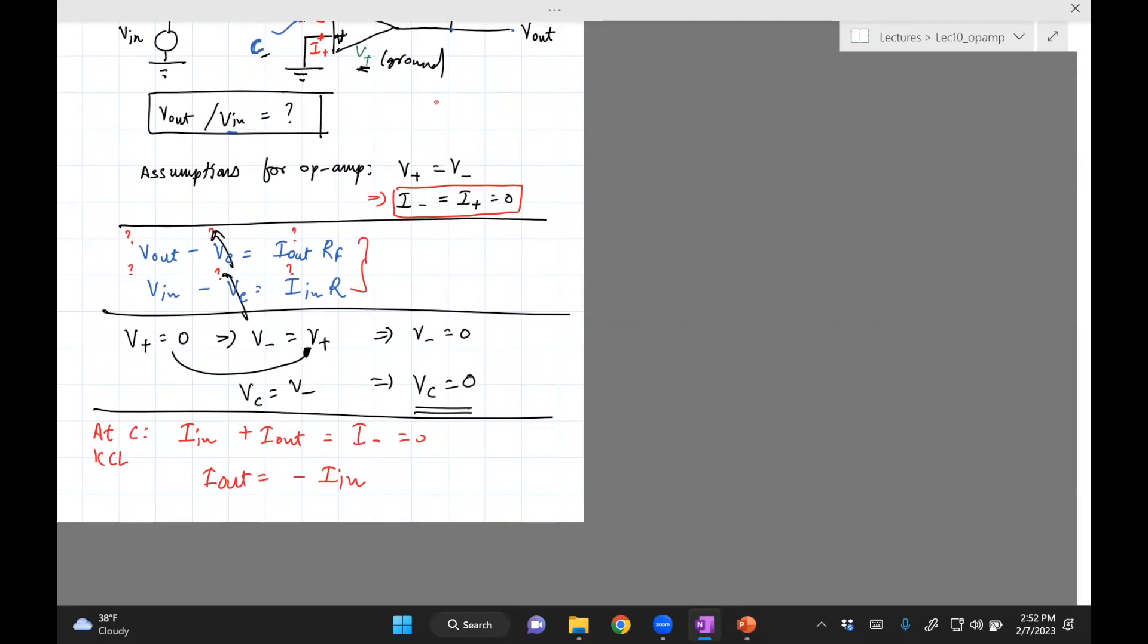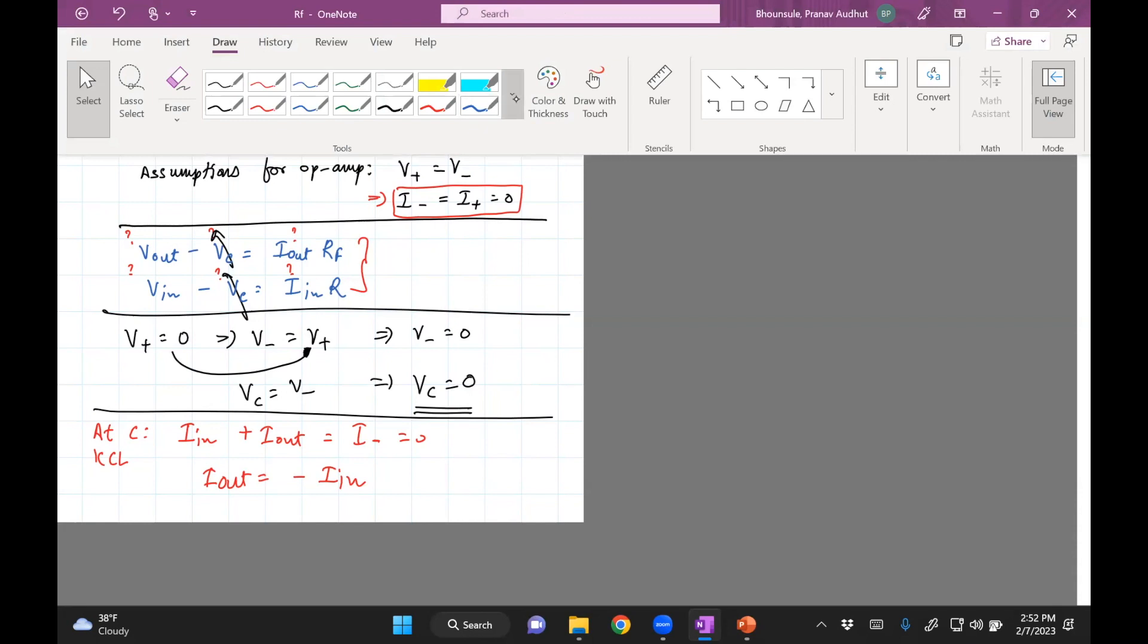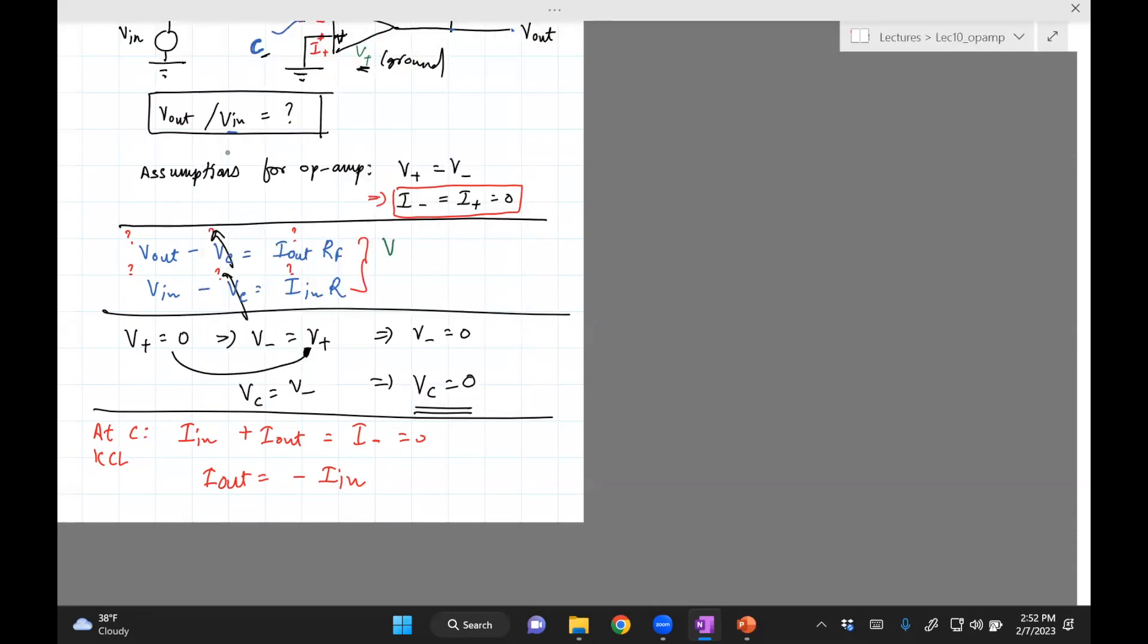What I can do here is take the ratio of V_out to V_in. And then you see that the ratio is I_out divided by I_in times RF divided by R. But I_out divided by I_in is nothing but, you can see from here, I_out divided by I_in is negative one.